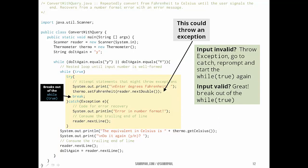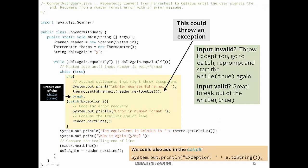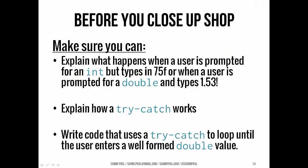The key things are: if the input is invalid, we head to the catch; otherwise we break out. In the catch, we receive the exception object 'e'. Since the exception thrown here would be a NumberFormatException, we can call e.toString() and print it to get a meaningful message showing what exception occurred. The key takeaways from today are understanding what happens when the user types invalid input when prompted for an int or double, how to use try-catch statements to handle that, and how to write a try-catch that loops until the user enters a well-formed double value.